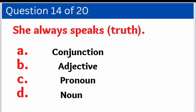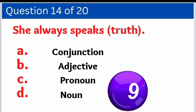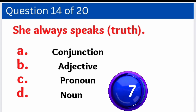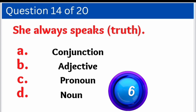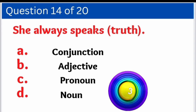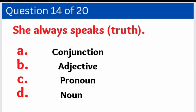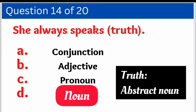Question number fourteen: 'She always speaks truth.' We have to identify how 'truth' is used as which part of speech. Options are: A. Conjunction, B. Adjective, C. Pronoun, D. Noun. And the right answer is option D — Noun. Truth is an abstract noun.